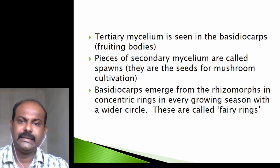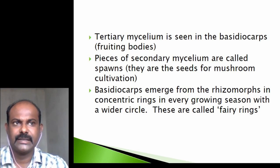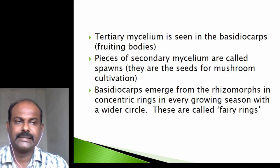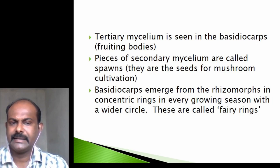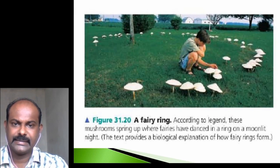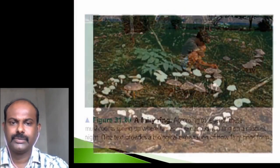The tertiary mycelium is seen in basidiocarps, which are the fruiting bodies. Pieces of secondary mycelium called spawn are used as seeds for mushroom cultivation. The basidiocarps emerge from rhizomorphs in concentric rings every growing season — this is called fairy rings, an extremely beautiful phenomenon.